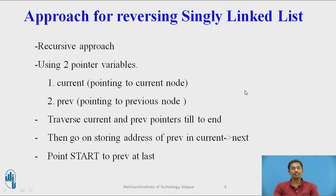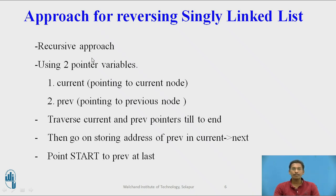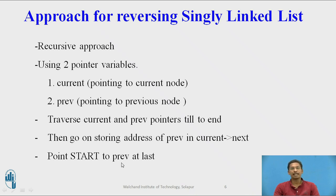The approach for reversing the actual singly linked list uses a recursive method with two pointer variables: current and previous. Current points to the current node; previous points to the previous node. We traverse current and previous pointers until current reaches the end. Then we store the address of previous in current's next part. Finally, start is updated to point to previous.